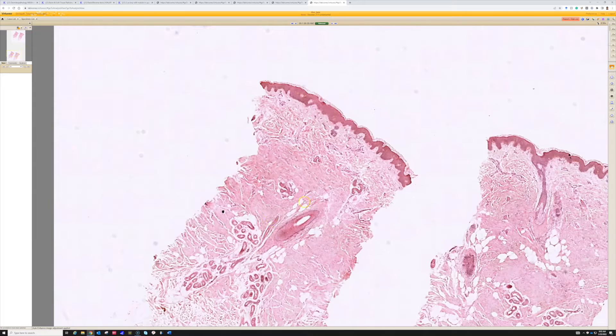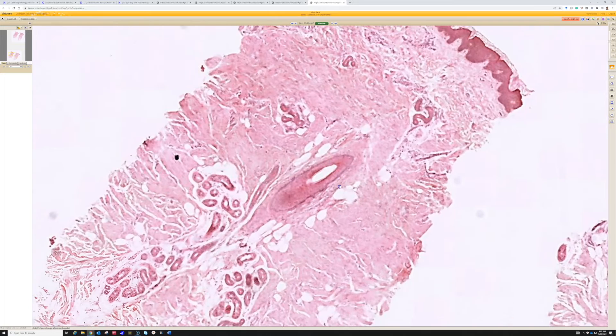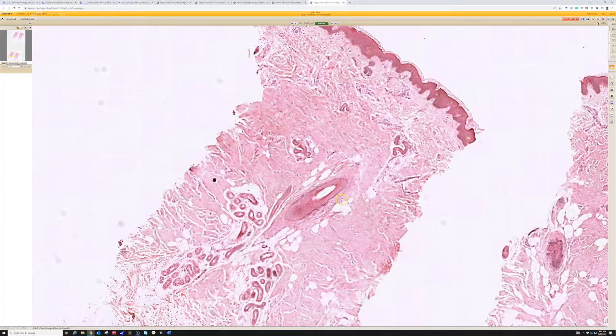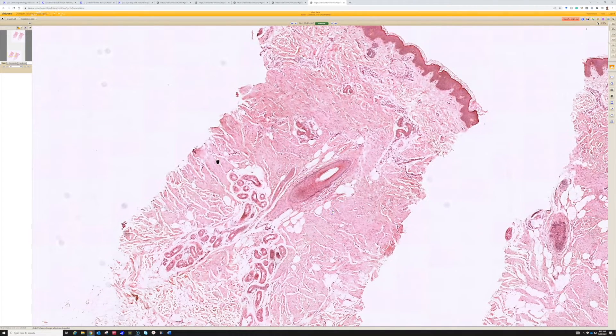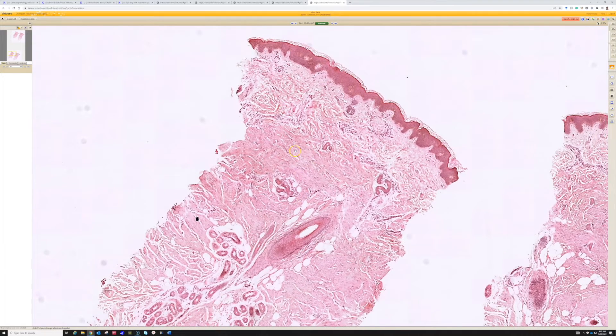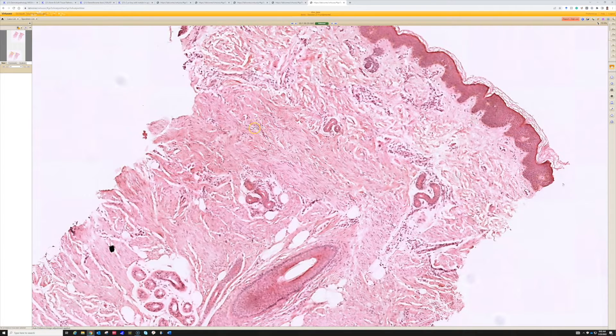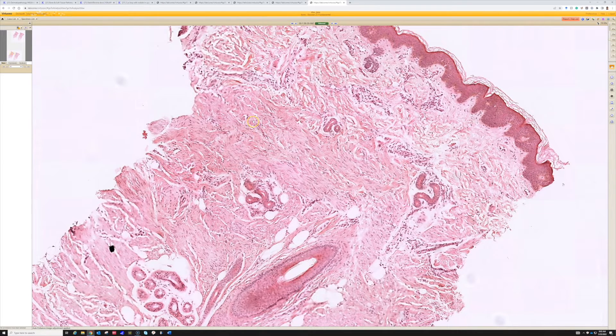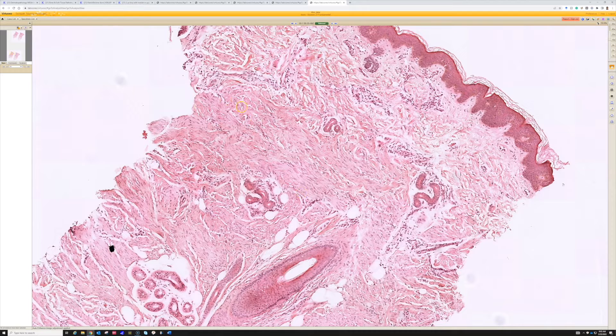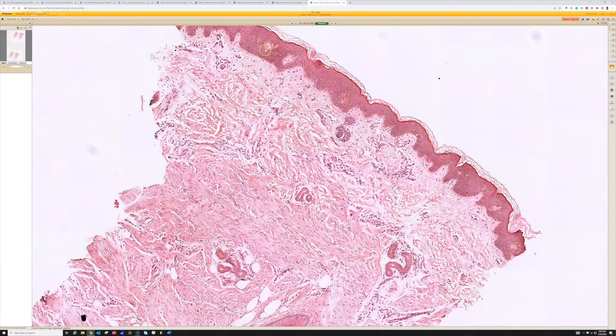And what we have are, let's go over to this side, unfortunately it's kind of got a crooked angle here, but I think you can still see we've got bland fibroblastic or myofibroblastic cells running in nice organized fascicles, and these fascicles are running parallel to the epidermis.